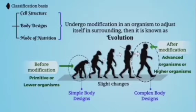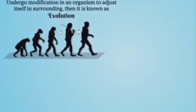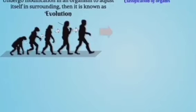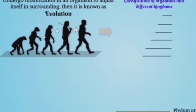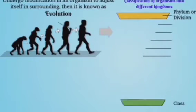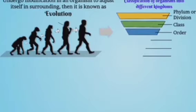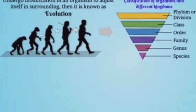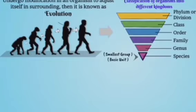The primitive organism has a simple body design, while the advanced organism has a complex body design. Animals are classified into several kingdoms, and kingdoms are further classified by many criteria: phylum and division, class, order, family, genus, and species. Species is the basic unit for classification.